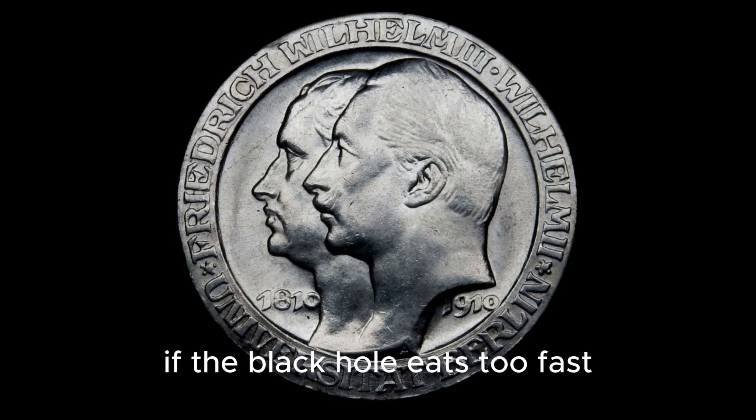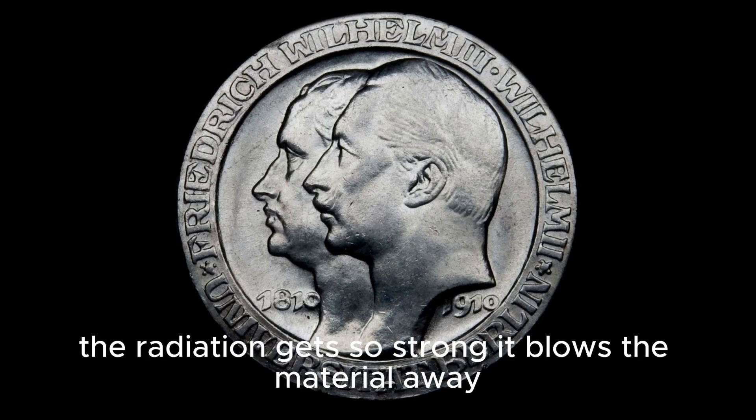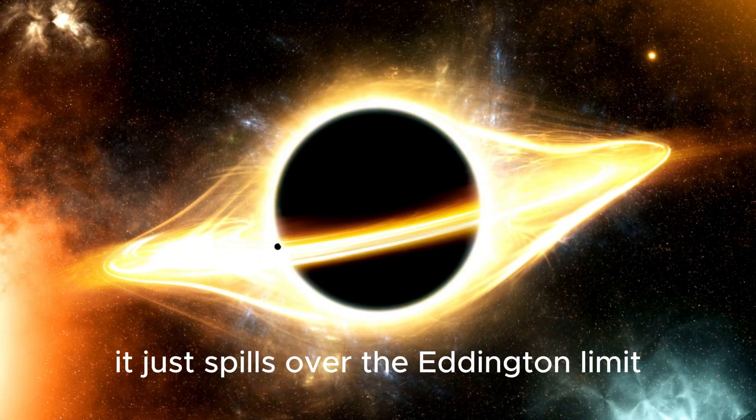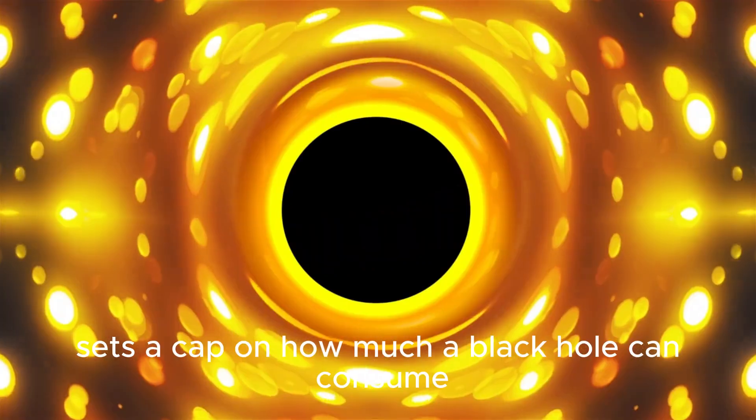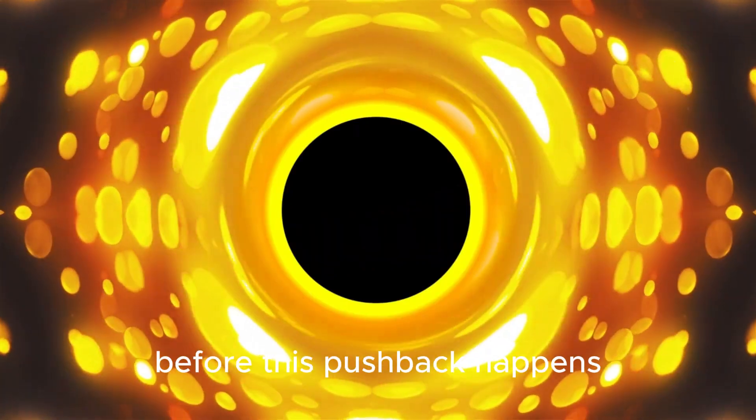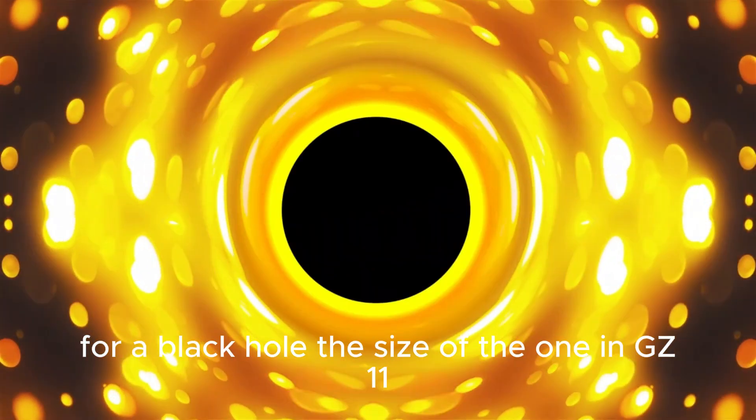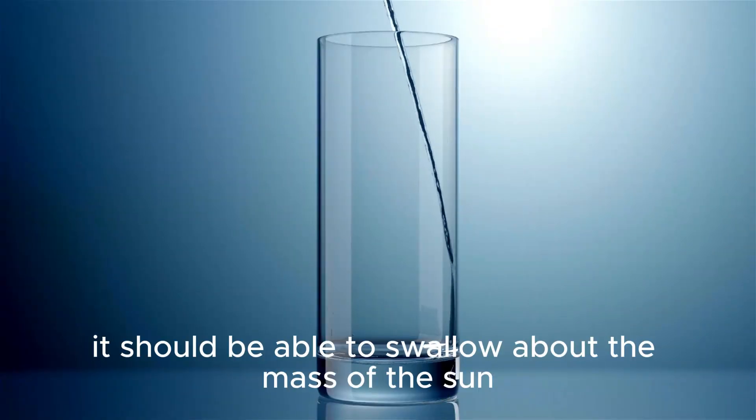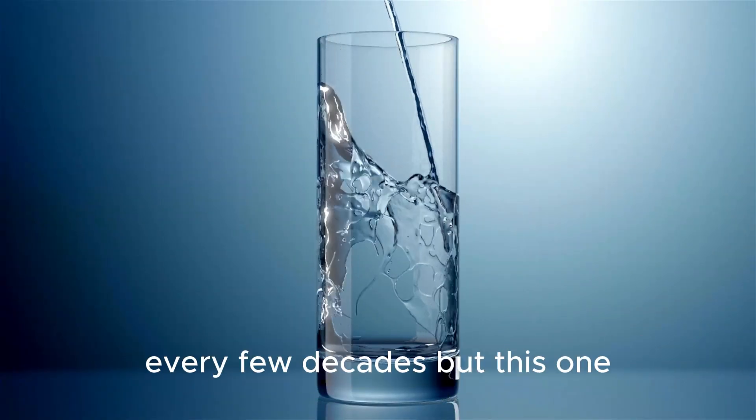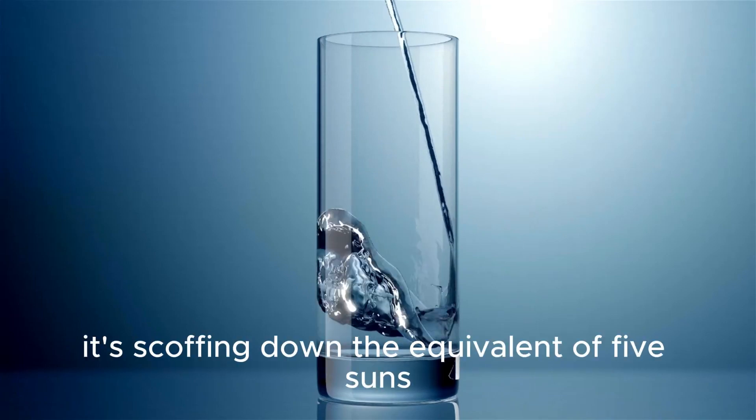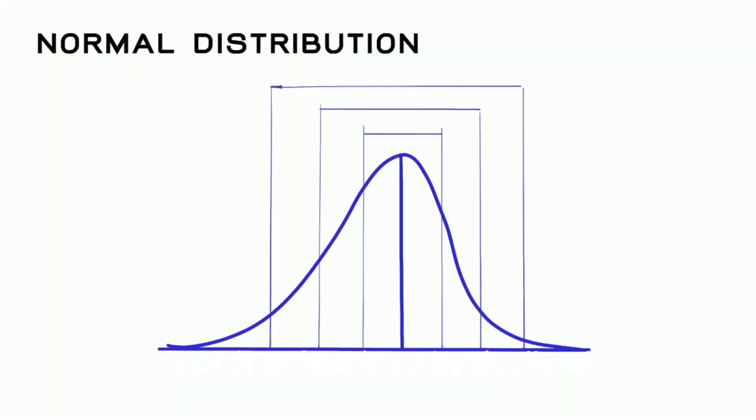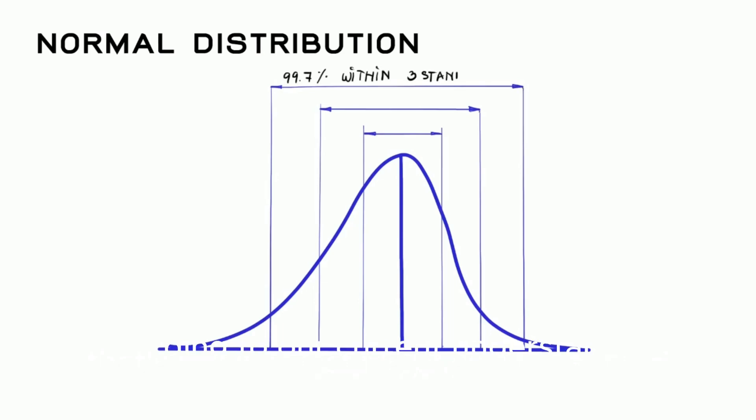If the black hole eats too fast, the radiation gets so strong it blows the material away. Kind of like trying to pour too much water into a glass, it just spills over. However, the Eddington limit sets a cap on how much a black hole can consume before this pushback happens. For a black hole the size of the one in GNZ-11, it should be able to swallow about the mass of the sun every few decades. But this one, it's scoffing down the equivalent of five suns worth of material every year. That's not just fast. It's physically absurd according to our current understanding of physics.